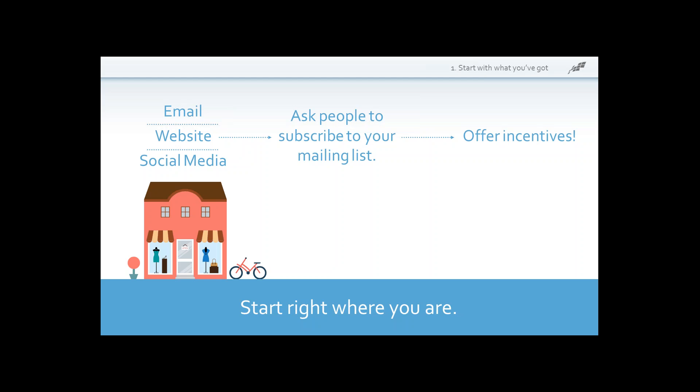Once you've identified where all of your contacts are located, organize them together in one place and upload them into your email service provider, like Constant Contact. Once you've done this, you've streamlined your mailing process, and you can begin sorting and segmenting them based upon those business needs. To sum up, you're going to collect, compile, and organize — start small, start where you are, and build in a way that makes sense for your organization.